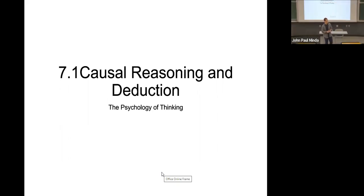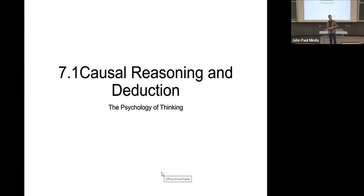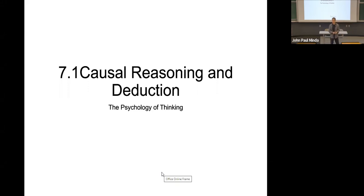We'll talk briefly about causal reasoning. Some of this material appears in the textbook, but a little bit of it for the first part does not. One of the things I want to highlight is some ways to think about cause and effect beyond just looking at correlations. The section on the delta rule isn't directly in the textbook, but you should probably know it because I'll definitely ask questions about it on the midterm.